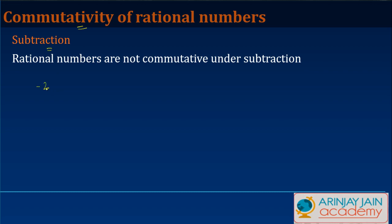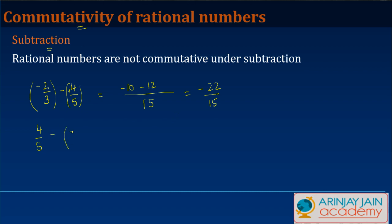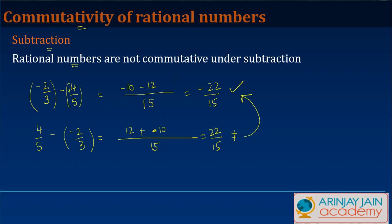Now let's see whether rational numbers are commutative under subtraction. Take minus 2 upon 3 minus 4 by 5. The LCM is 15; 5 times minus 2 gives minus 10, minus 3 times 4 gives minus 12, resulting in minus 22 by 15. Now reversing: 4 upon 5 minus minus 2 upon 3. The LCM is 15; 3 times 4 gives 12, and minus minus 2 times 5 gives plus 10, resulting in 22 by 15 — not equal to minus 22 by 15. So rational numbers are not commutative under subtraction.